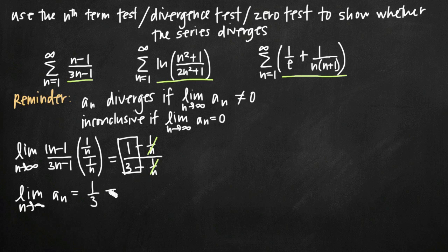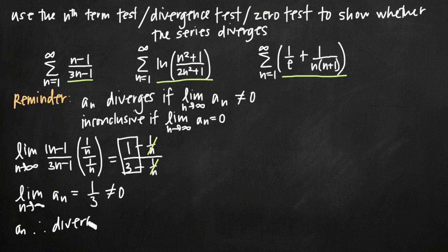Since 1/3 does not equal zero, by the divergence test we can conclude that series a_n diverges. The divergence test is conclusive here because this 1/3 value is not equal to zero.